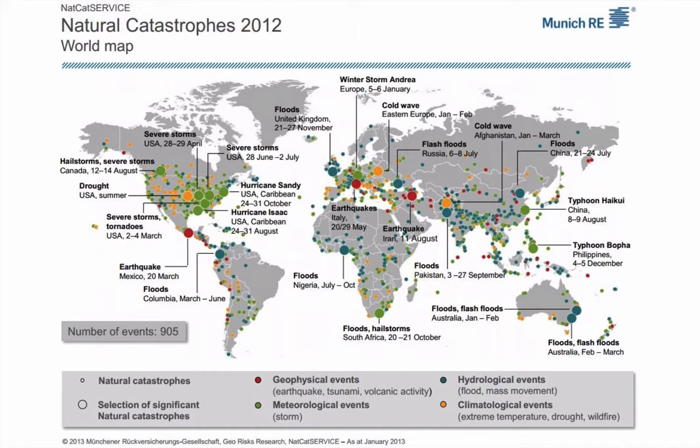Just look at the graph. Look at the number of times you read the word floods on this. Flooding is everywhere. This is even a year where we had a really globally very dry pattern — we had major drought in the United States — yet still globally, flooding was a major contributor to natural catastrophes.